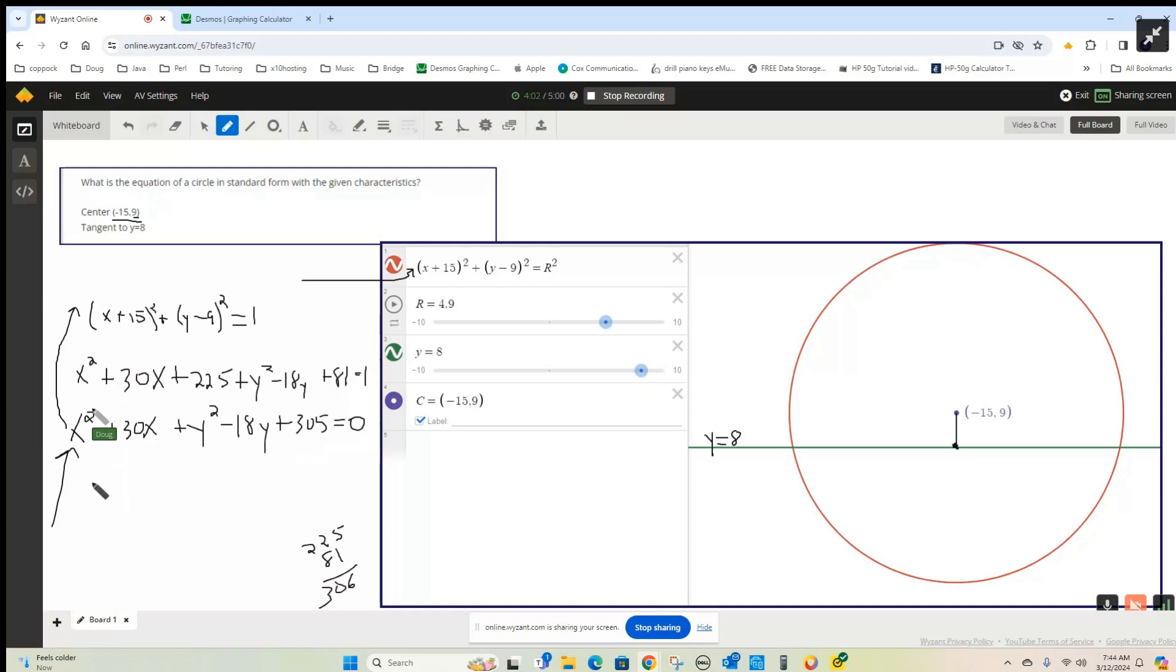I'll take you quickly through that. X squared plus 30x plus y squared minus 18y equals negative 305. Then we complete the square by taking half of 30, adding the square of that.